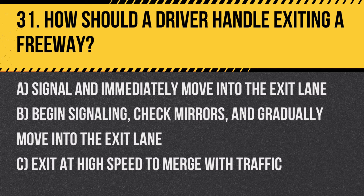Question 31: How should a driver handle exiting a freeway? A. Signal and immediately move into the exit lane. B. Begin signaling, check mirrors, and gradually move into the exit lane. C. Exit at high speed to merge with traffic. Answer: B. Begin signaling, check mirrors, and gradually move into the exit lane. This approach allows for a smooth and safe transition from freeway speeds to the exit ramp.